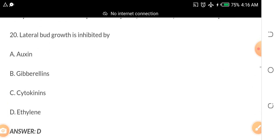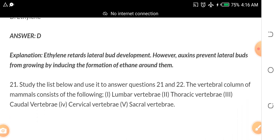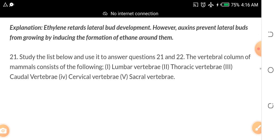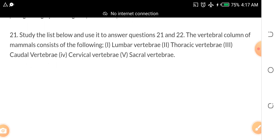Question 20. Lateral bud growth is inhibited by A. Auxin B. Gibberellin C. Cytokinin D. Ethylene. The answer is ethylene. Ethylene retards lateral bud growth and development. However, auxins prevent lateral buds from growing by inducing the formation of a layer around them. Now, if you have been benefiting from the videos I've been doing, please let me know. Tell me how these videos have been helping you. And if there's any video I've not created that you want me to create, let me know.